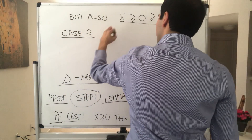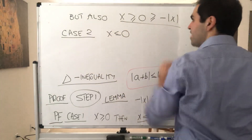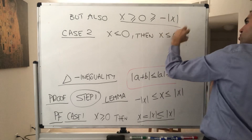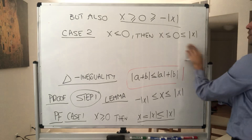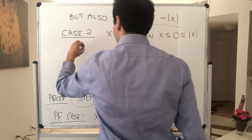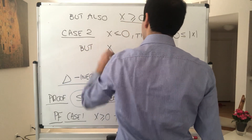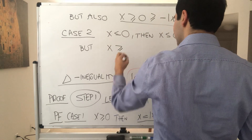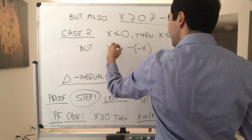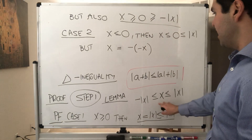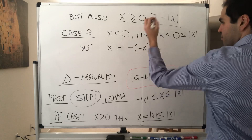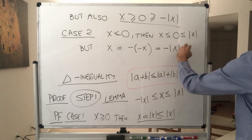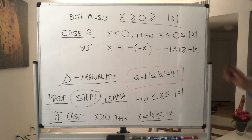And now case two: if x is negative, then since the absolute value is positive, x is of course less than or equal to its absolute value. But x is also greater or equal to negative its absolute value, because x equals minus minus x, and in this case minus x is the absolute value of x. So x equals minus the absolute value of x, and in particular x is greater or equal to minus the absolute value of x — because it's equal in this case.